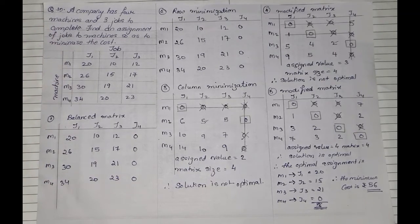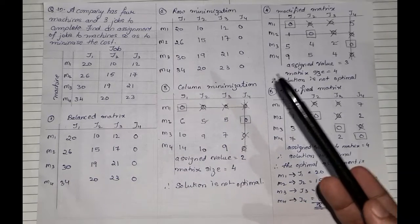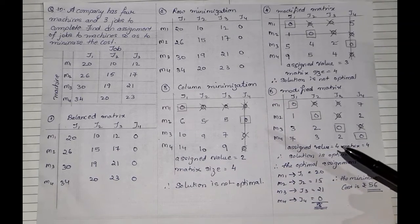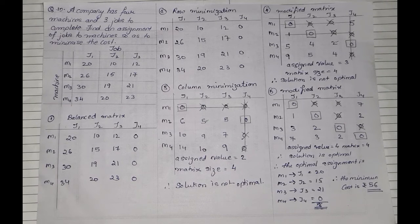With that, we completed a minimization sum that was unbalanced. We first balanced it, then did row minimization and column minimization. The sum was not optimal after one modification, so we re-modified it, and then obtained the optimal solution. This was the 10th video in our video series on the assignment model. Thank you.